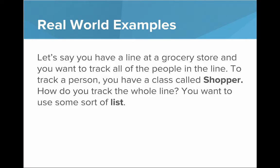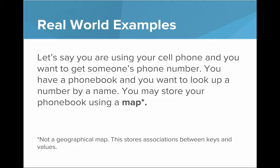Let's say you have a line at a grocery store and you want to track all the people in line. To track a person you have a class called Shopper, but how do you track the whole line? You would do this using some sort of list — a list of shoppers. The list here is the data structure.